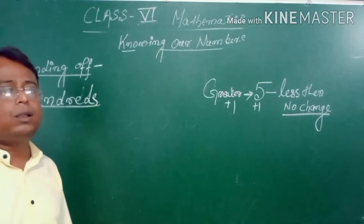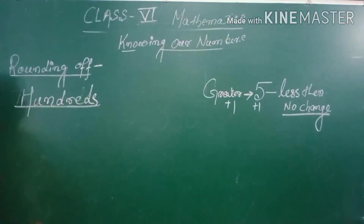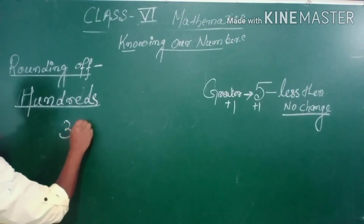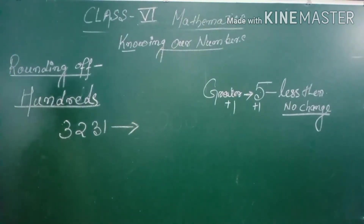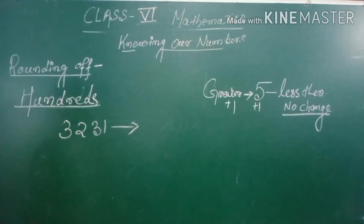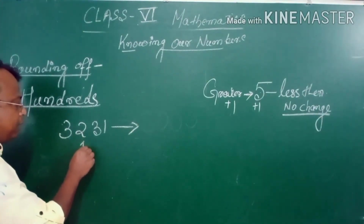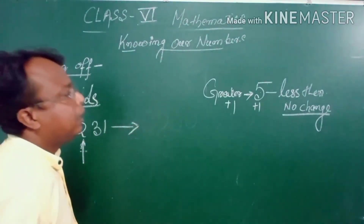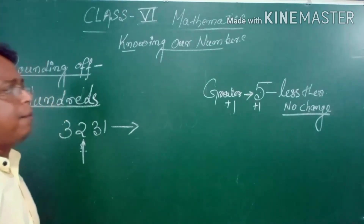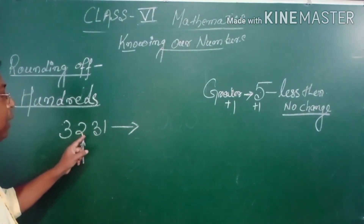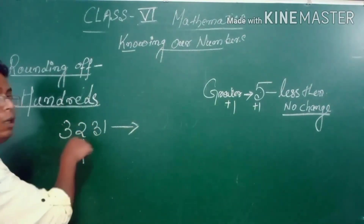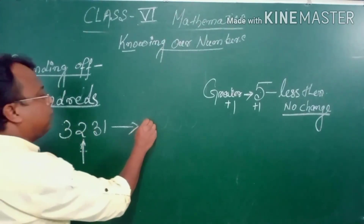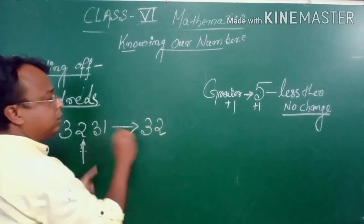Now let us try rounding off a number to the nearest hundreds. Suppose the number is 3231. We are rounding to nearest hundreds. The hundreds digit is 2. See the next digit — it is 3. Is 3 less than 5? Yes — no change. So we keep 3 and 2 as they are, and the remaining digits become 0: 3231 rounded to nearest hundred is 3200.